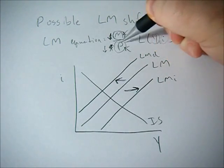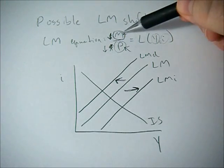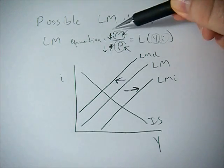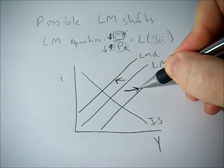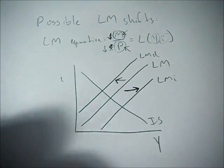If generally prices go down, we're going to see an increase in this real money supply. And so the demand for money is going to have to increase and we see this rightward shift in the LM curve.